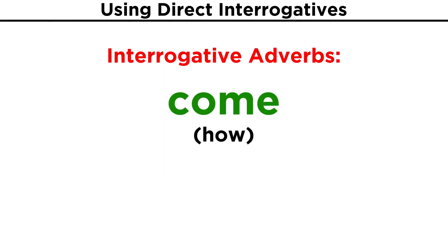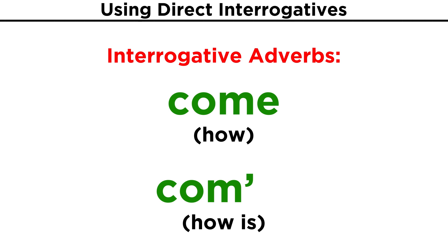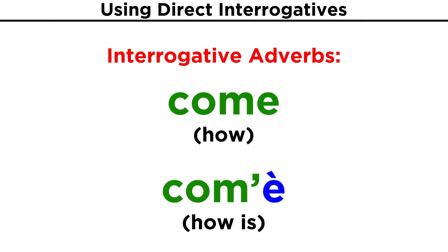Now that we can ask who and what, let's learn to ask how. For this, we use come. Let's differentiate come from come è: come, with emphasis on the o, simply means how. If we want to ask how is, we shorten come by replacing the e with an apostrophe and then add the word è, which means is. This è is open and stressed. Let's use both of these now.